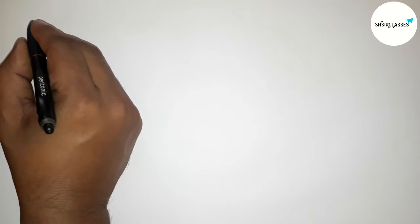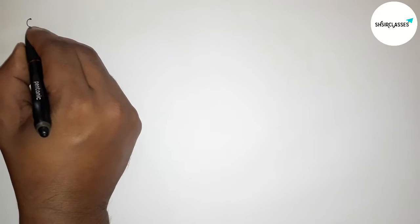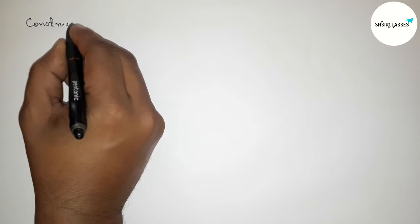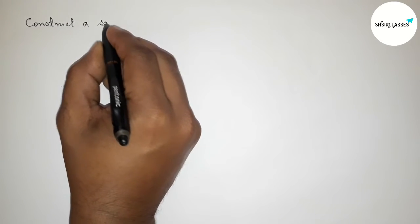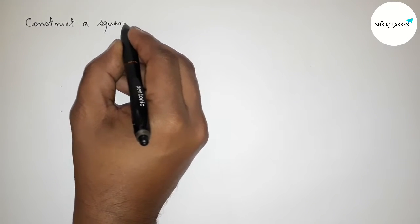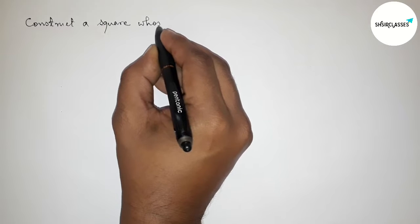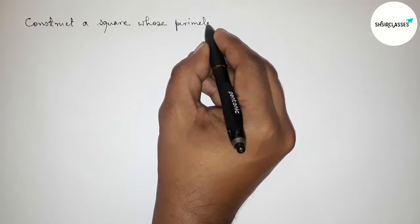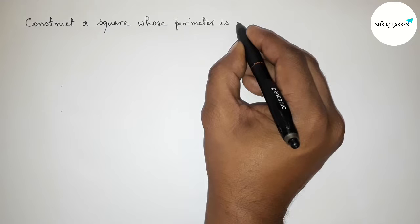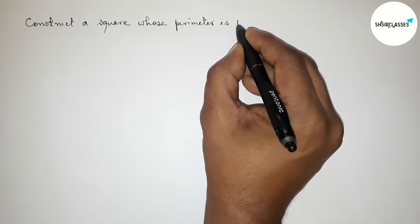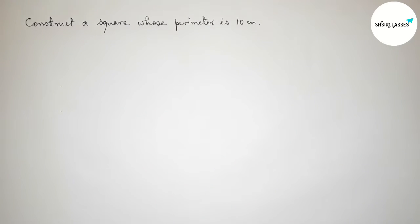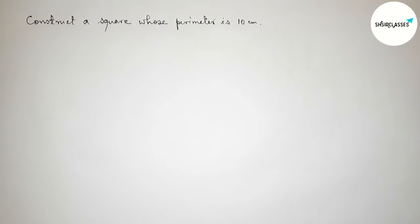Hi everyone, welcome to SI Share Classes. Today in this video we have to construct a square whose perimeter equals 10 centimeters. Please watch the video till the end. Let's start.